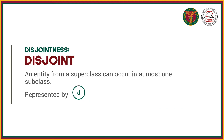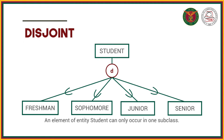We have disjointness constraints. First, disjoint: an entity from a superclass can occur in at most one subclass, represented by the letter D inside the circle. This means an entity can only belong to one subtype.